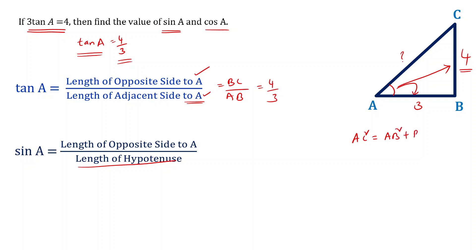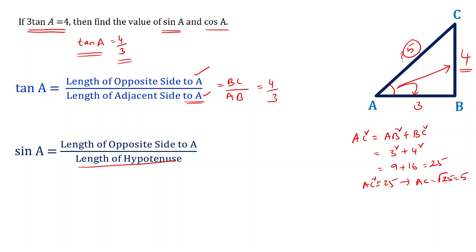The square of the hypotenuse — AC squared — equals the sum of the squares of the other two sides: AB squared plus BC squared. AB squared is 3 squared and BC squared is 4 squared, giving 9 plus 16 equals 25. So AC squared equals 25, meaning AC equals the square root of 25, which is 5.